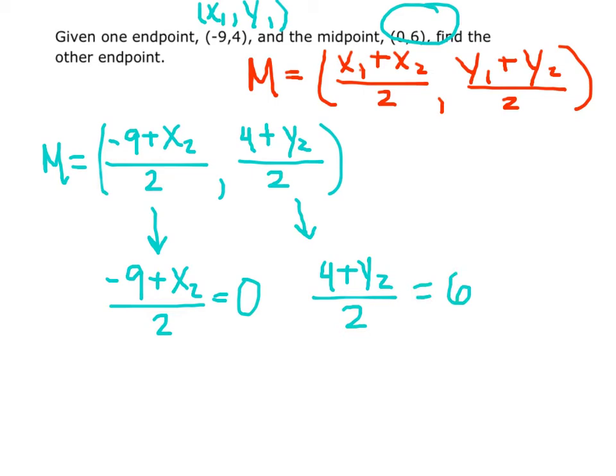Now solving for x sub 2 and y sub 2, we multiply both sides by 2. When simplifying we have negative 9 plus x sub 2 equals 0. And adding 9 to both sides, we solve for x sub 2 equaling 9.